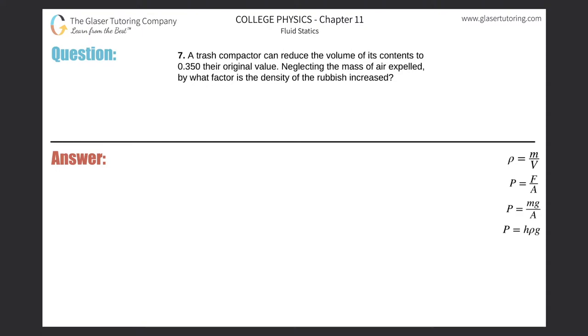Number seven, a trash compactor can reduce the volume of its contents to 0.35 their original value. Neglecting the mass of air expelled, by what factor is the density of the rubbish increased?